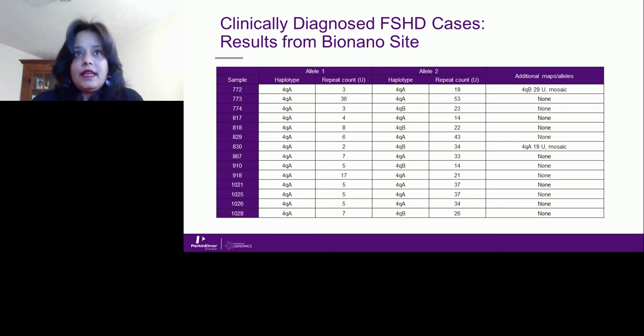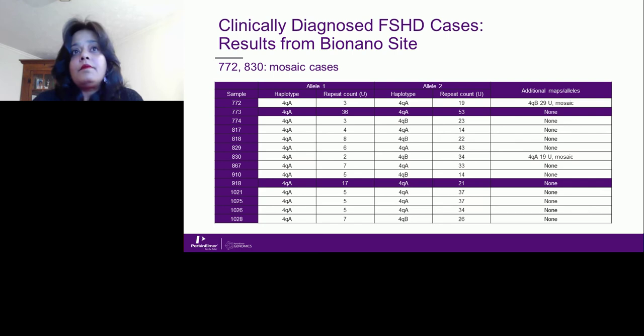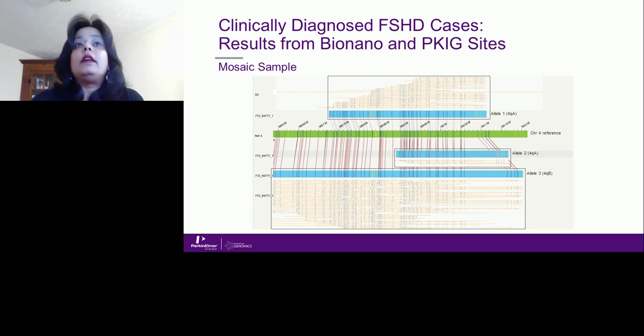These are results from the 14 clinically diagnosed FSHD cases. The same 14 samples were run at the BioNano site in San Diego and at the PerkinElmer site in Pittsburgh. Allele one and allele two measurements showed that 12 out of the 14 demonstrated repeat contractions. However, samples 773 and 918 did not show repeat contractions. We also found possible mosaicism in two cases: 772 and 830.